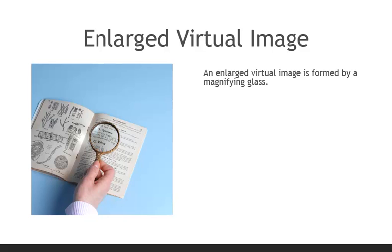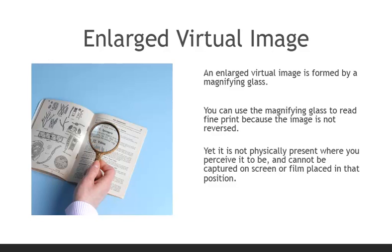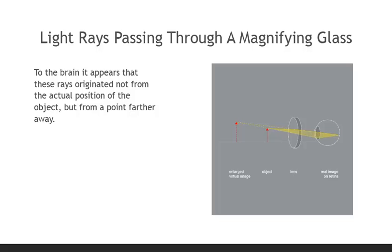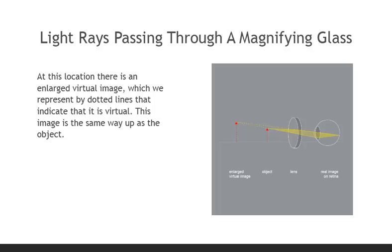An enlarged virtual image is formed by a magnifying glass. You can use the magnifying glass to read fine print because the image is not reversed, yet it is not physically present where you perceive it to be, and cannot be captured on a screen or film placed in that position. Rays from the point of the solid red arrow, which represents our object, pass through the lens and come together again at a point to form a real image on the retina. At this location there is an enlarged virtual image, which we represent by dotted lines to indicate that it is virtual. This image is the same way up as the object.